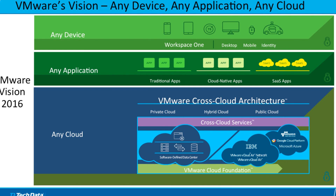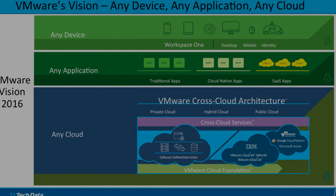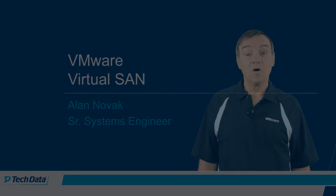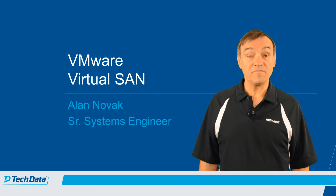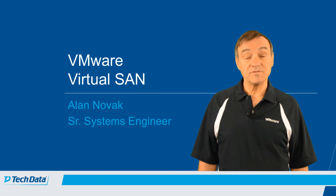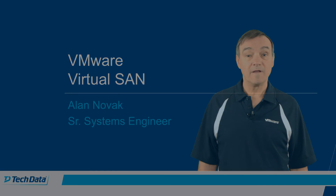That concludes what I have for you in this session. To summarize, vSAN is part of VMware's Any Device, Any Application, Any Cloud vision under the Private Cloud section of the VMware cross-cloud architecture. Hope you found today's session about vSAN and HCI helpful. If you would like more information, please contact your VMware team at Tech Data. Thank you.